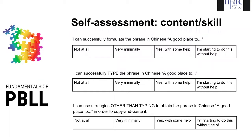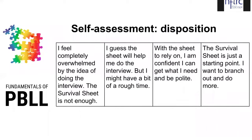For self-assessment of content and skills, you can have learners agree or disagree with parts of the student learning outcome. For example, 'I can successfully formulate the phrase in Chinese — a good place to do something.' They then decide: not at all able, minimally able, able with some help, or starting to do it without help. The target level for this activity was that students could do it with help, so the third box — 'yes, I can do this with some help' — is the target; the last box means they've exceeded it.